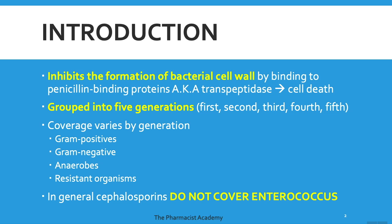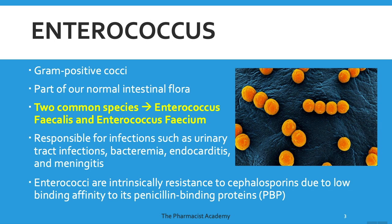Please remember that cephalosporins do not cover enterococcus — this shows up a lot on exams. Enterococcus is a gram-positive cocci, meaning it's spherical. Part of our normal intestinal flora contains enterococcus. If there's any imbalance in the gut flora — because there are millions of bacteria sharing nutrients — the enterococcus may get more nutrients compared to the other bacteria, become more virulent, and that's when it becomes the bad bacteria and causes an infection.